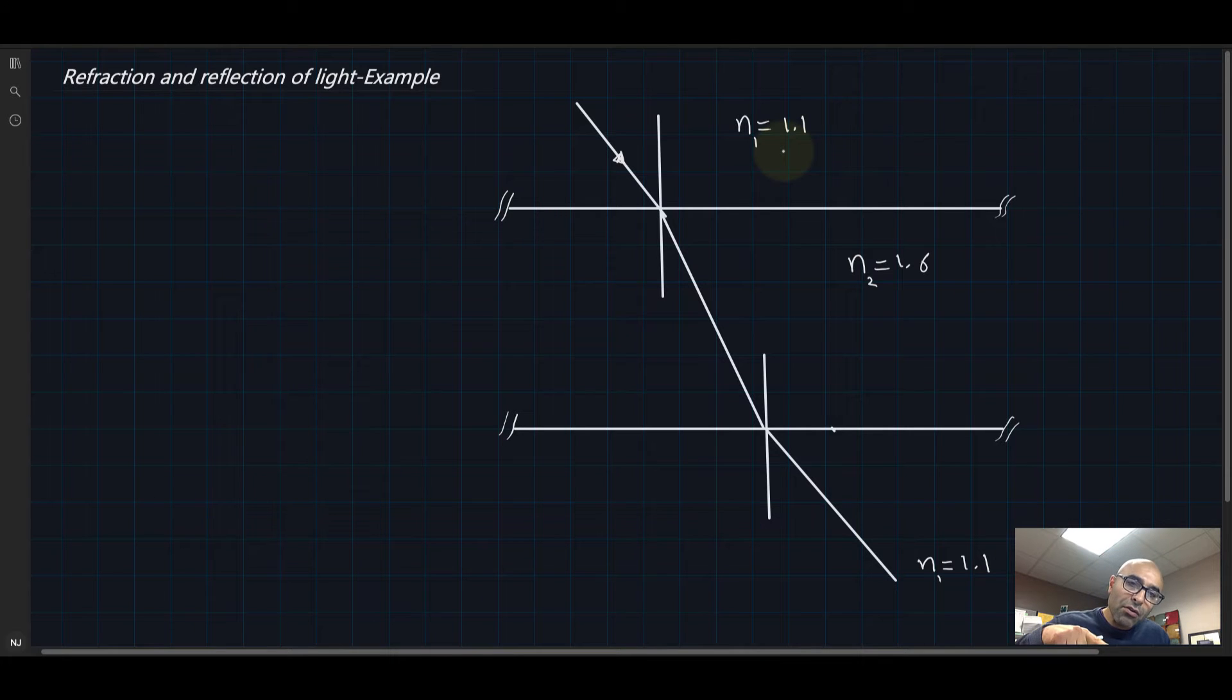Then it impinges inside the glass into air again. So that's how things are. If this angle is given to be equal to 35 degrees, we need to find this angle, this angle, and some of the light we are going to assume it's going to reflect.